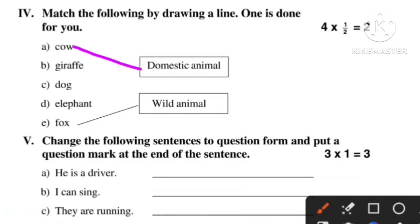Cow - domestic animal. Giraffe - wild animal. Dog - domestic animal. Elephant - wild animal.